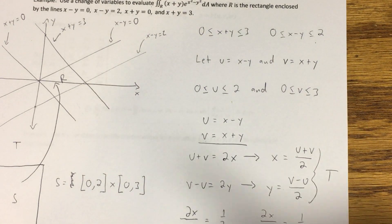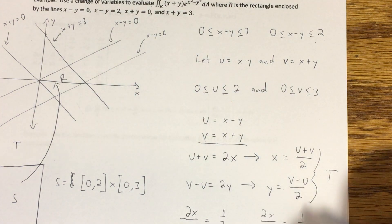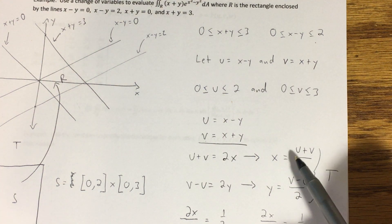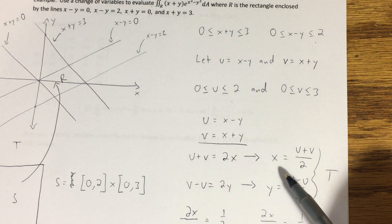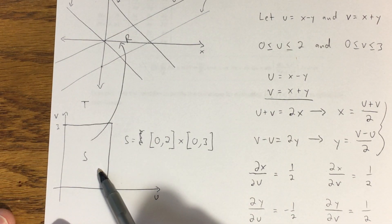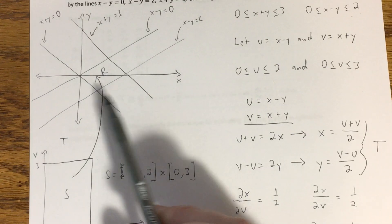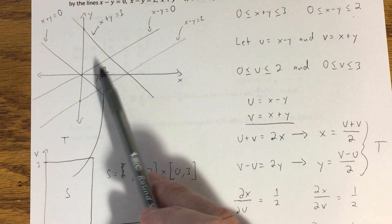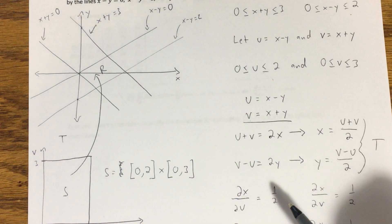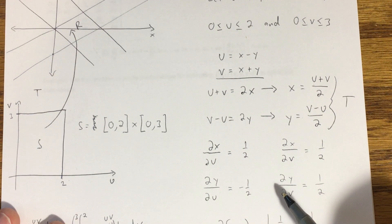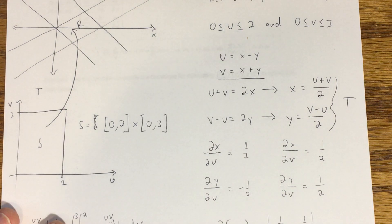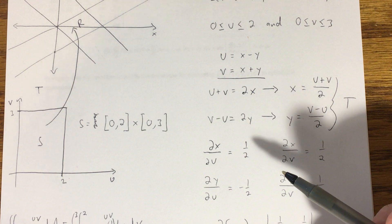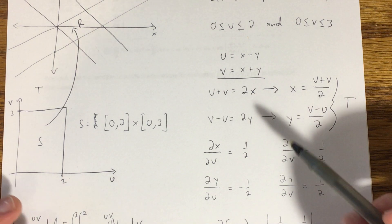Alright, so I've actually gone ahead and worked out the rest of this problem already, so I'm just going to talk you through what I did. In the last video, we came up with the transformation that's going to take our nice rectangle S in the UV plane onto our less nice rectangle R in the XY plane. And in order to now evaluate the double integral with this change of coordinates or a change of variables, we need to find our Jacobian.